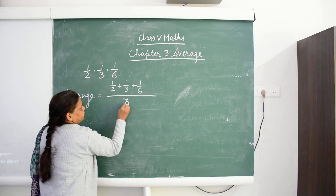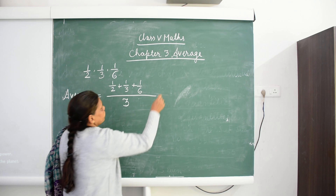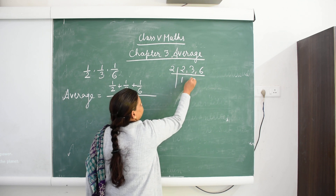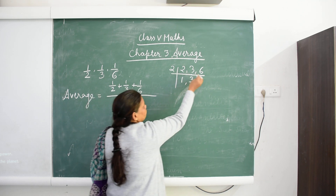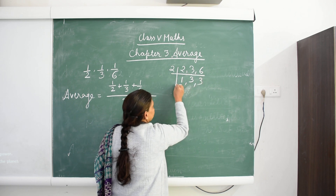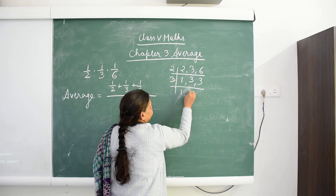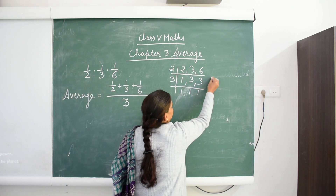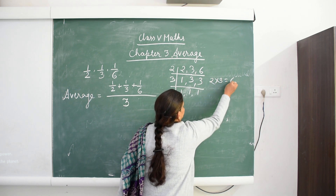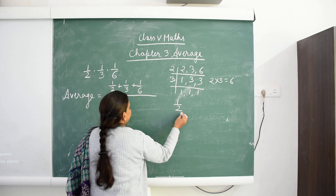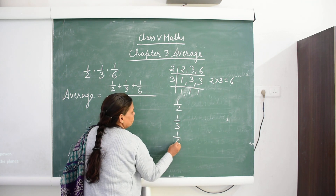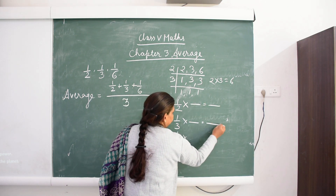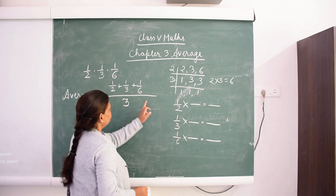First, find the LCM of 2, 3, and 6. 2 divides 2; 3 is not divisible by 2 so we write it as is; 3 divides 6 giving 2; then 3 divides 3. So the LCM of 2, 3, and 6 is equal to 6.